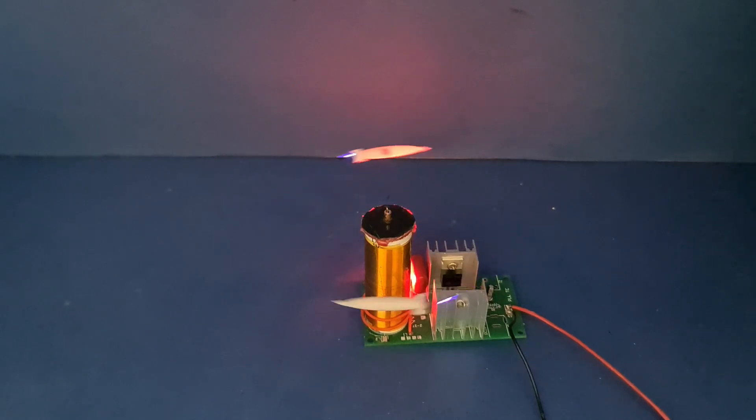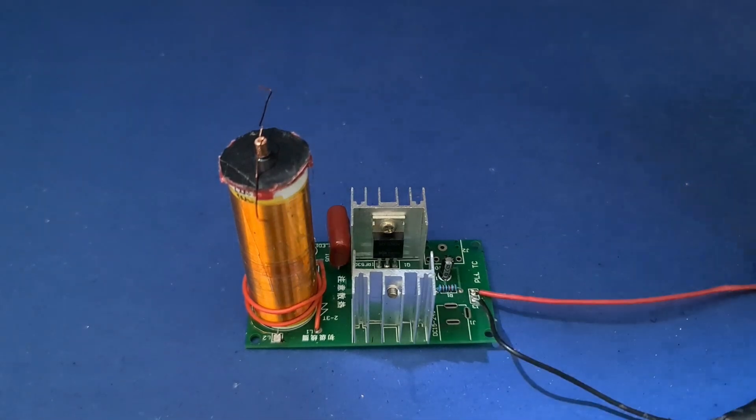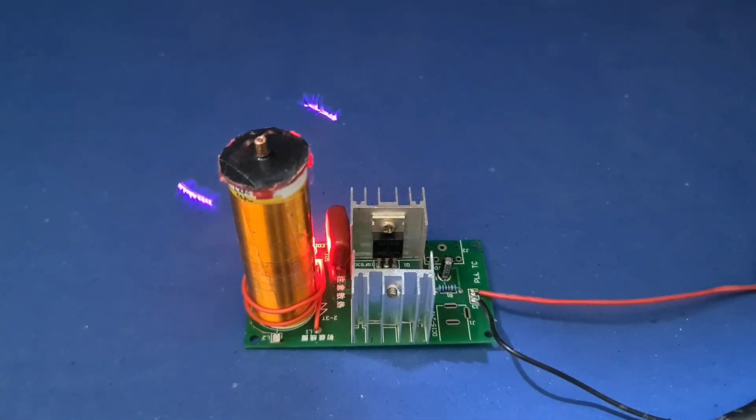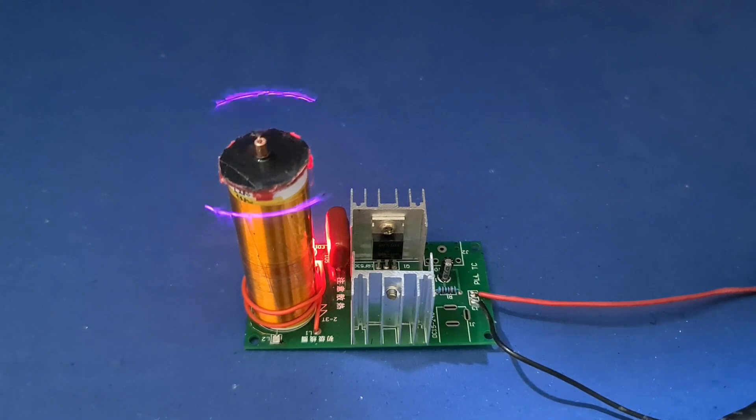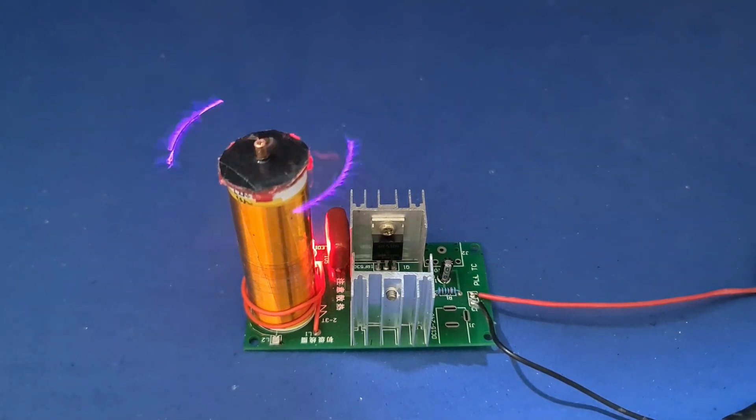But surprisingly, you can see these are moving. I think I should try something lighter to see how fast it can go. Wow, it almost looks like a motor, very fast indeed. Now I will show you how to use this Tesla coil as a Bluetooth audio device.